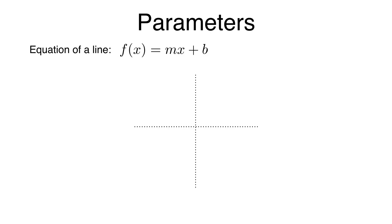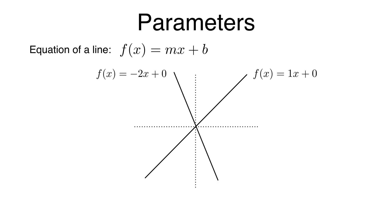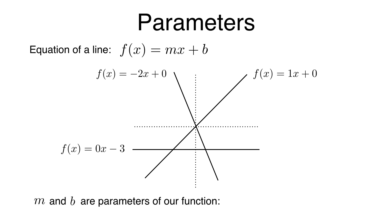Let's talk about parameters. Here's the familiar equation for a line — it has a slope m and a y-intercept b. If the slope is 1 and the y-intercept is 0, we get one line. If the slope is negative 2 and the y-intercept is 0, we get another line. And if the slope is 0 and the y-intercept is negative 3, we get yet another line. By choosing different slopes and y-intercepts, we get different lines — so the slope and y-intercept are parameters of our function.